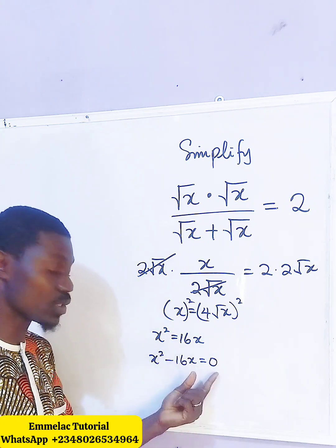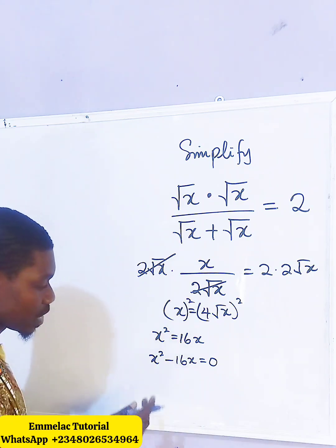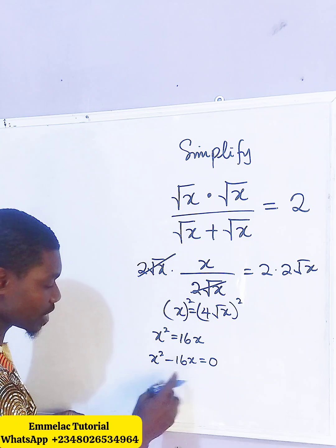That is, we have to make the equation equal 0, or we subtract 16x from both sides of the equation. So at this point, let us now factor out x from the left-hand side.